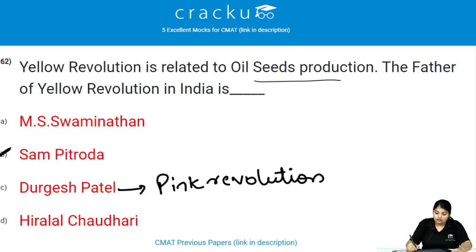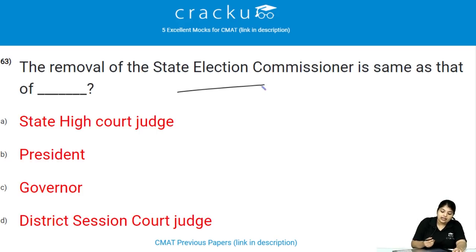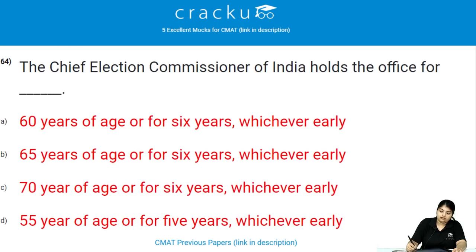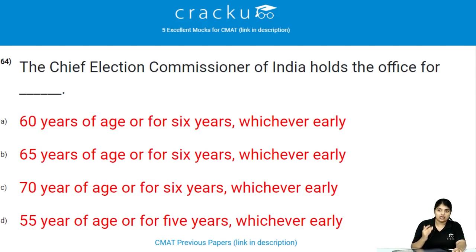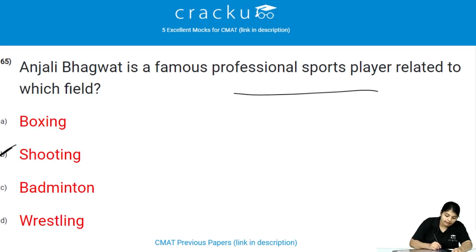The removal of the State Election Commissioner is the same as that of removing a State High Court judge. The Chief Election Commissioner of India holds office for 65 years of age or six years, whichever is earlier. Anjali Bhagwat is a famous professional sports player related to the shooting field.